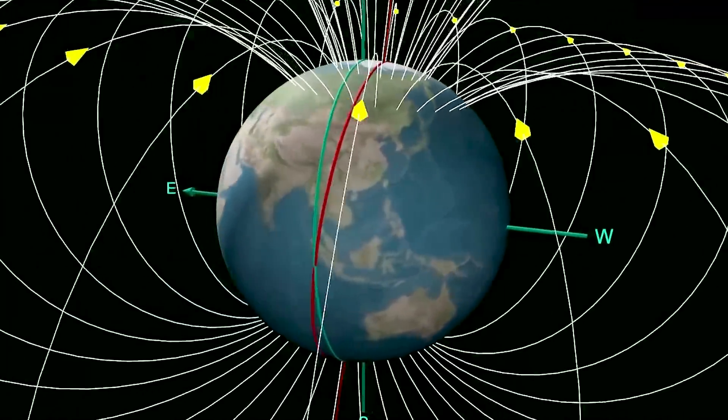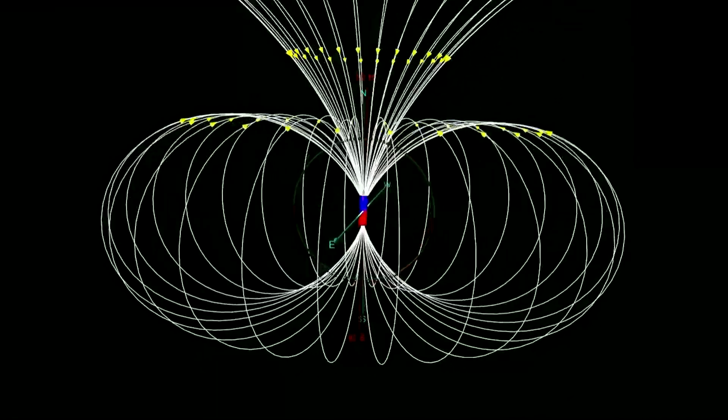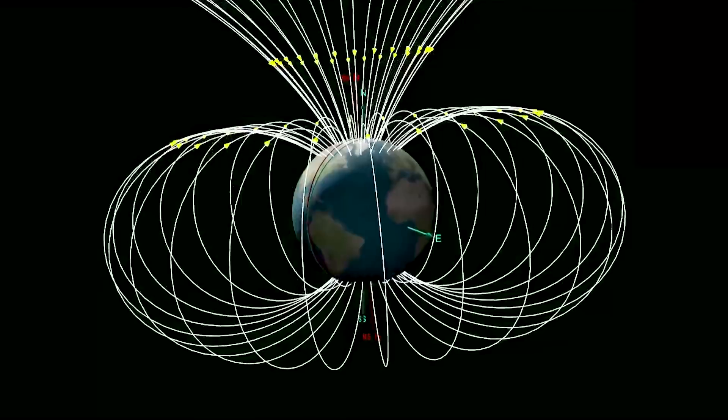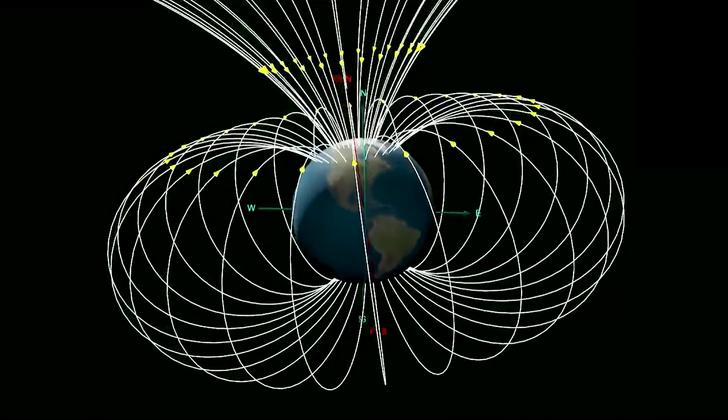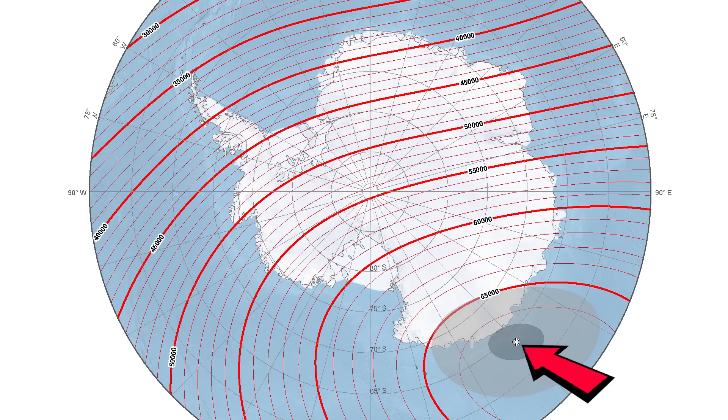Just like a bar magnet, Earth has a positive magnetic pole and a negative magnetic pole. Earth's positive magnetic pole, where the magnetic field is flowing outwards, is located in the southern hemisphere right off the coast of Antarctica, close to Earth's tilt and rotation axis south pole.